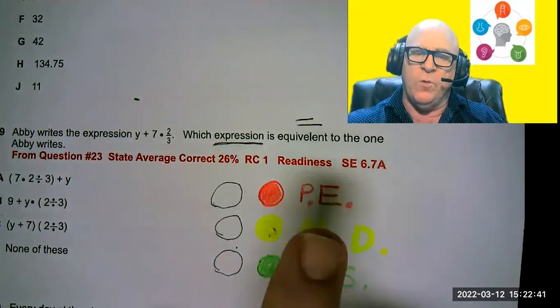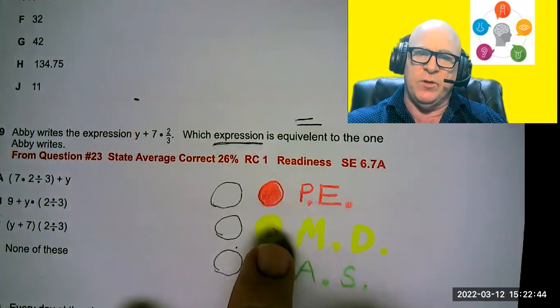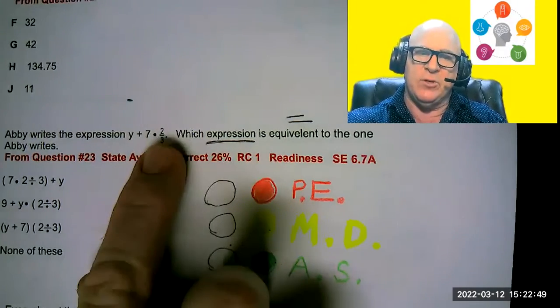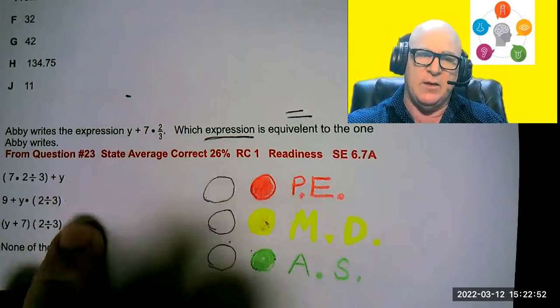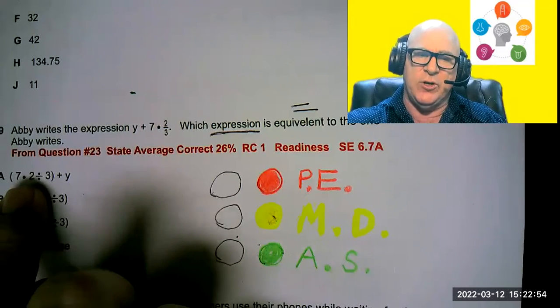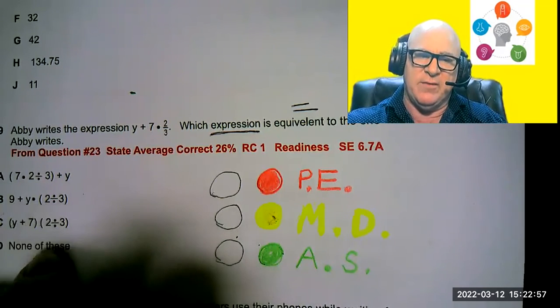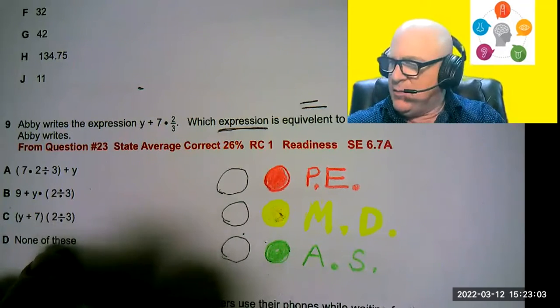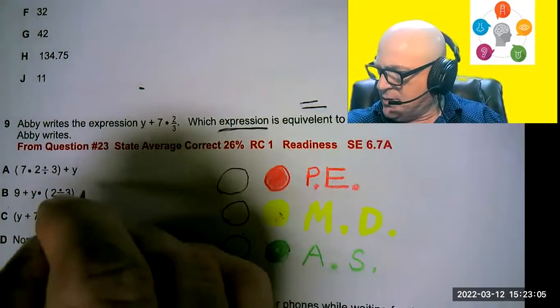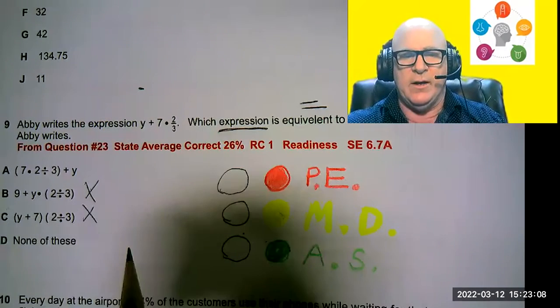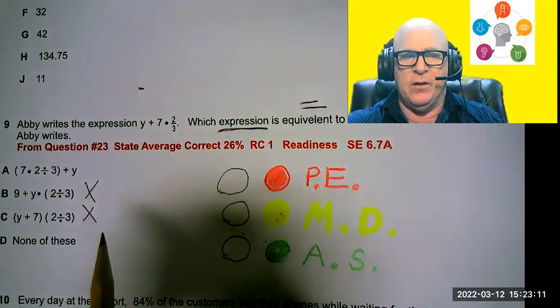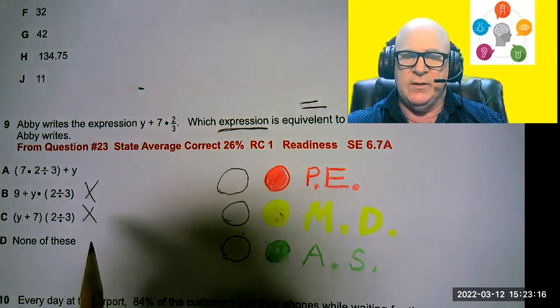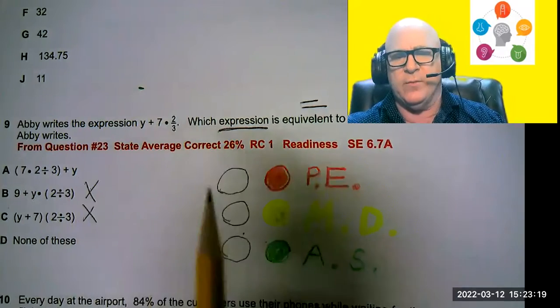So your students would hopefully have remembered, well, step two is do multiplication. What can I multiply? Seven times two. Is there anything that says that? Yeah, there's a seven times two right there. None of the other ones have a seven times two. So I would automatically be able to eliminate these two, and I'm not going to cross off D because I got to make sure that it does the next thing.